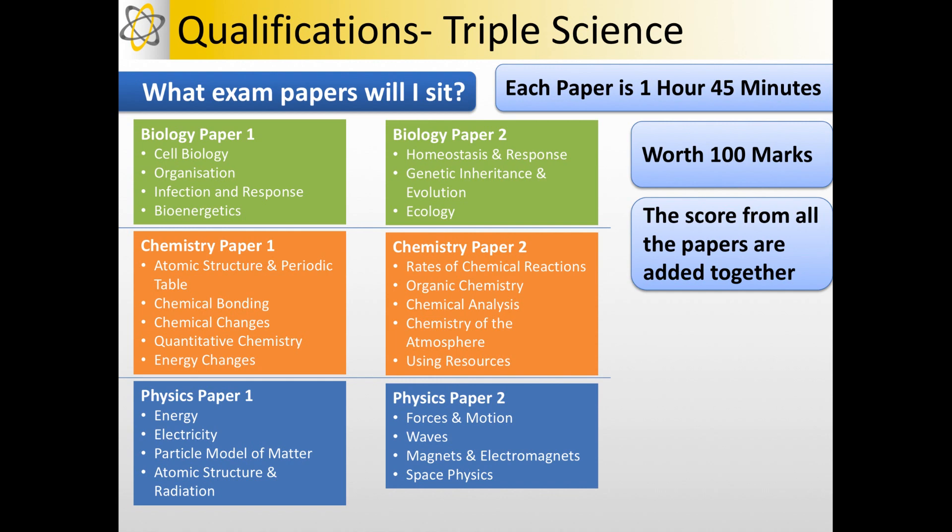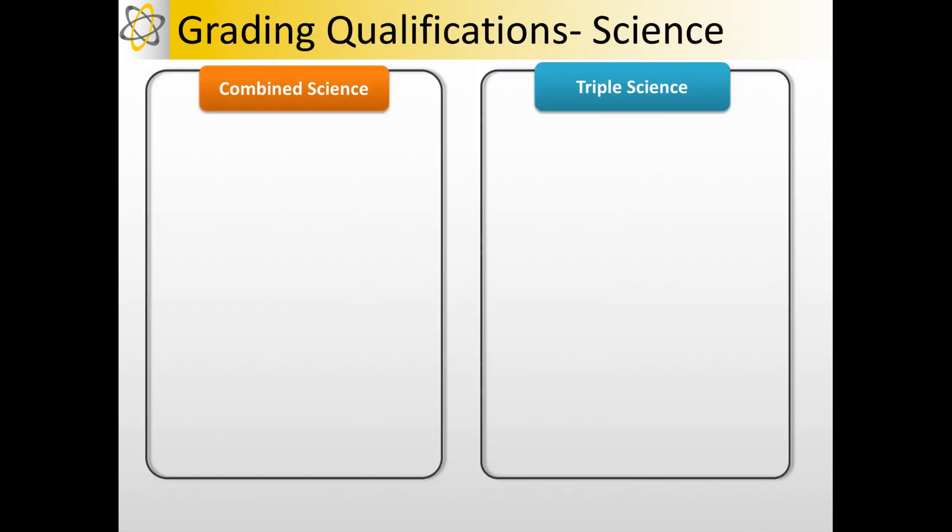The scores from all the papers are added together for each qualification. So the two Biology papers will be added together and you'll then go through that process of ranking and the grade boundaries being added. The two Chemistry papers will be added and the two Physics papers will be added together. So you then get individual grades for each of the sciences.